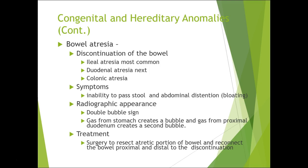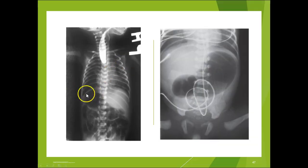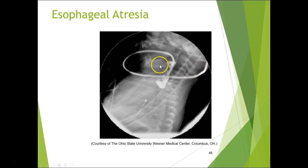Bowel atresia is discontinuation of the bowel. Ileal atresia is most common, then duodenal, then colonic. Symptoms include inability to pass stool and abdominal distension. We look for a double bubble sign — gas from the stomach creates one bubble, gas from the proximal duodenum creates a second bubble. On the image you can see two bubbles and big gastric distension. On the esophageal atresia image, the NG tube can't pass and injected contrast shows it's not going down as it should.